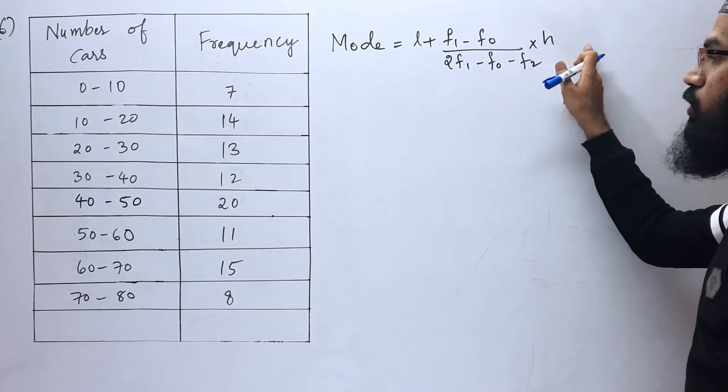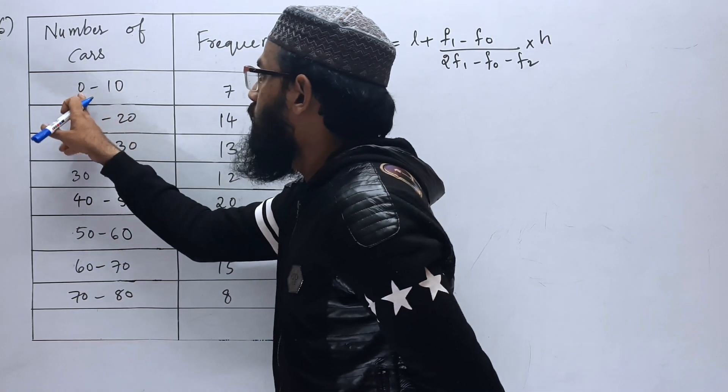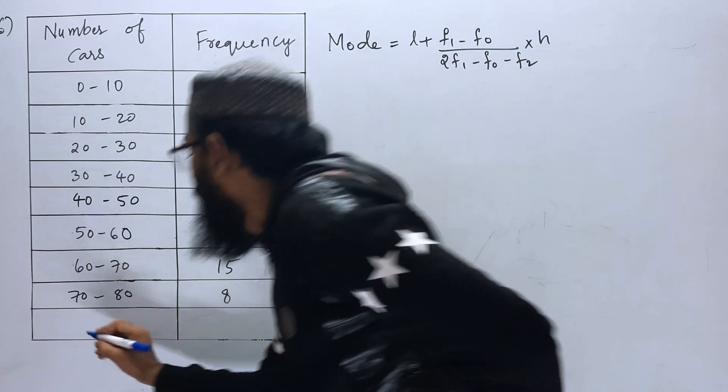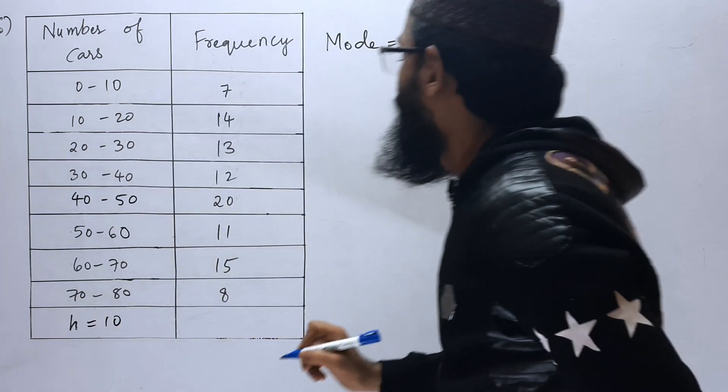First of all, let us find out H. H is the class size or you can say class width. So 10 minus 0 is 10. So H is equals to 10.